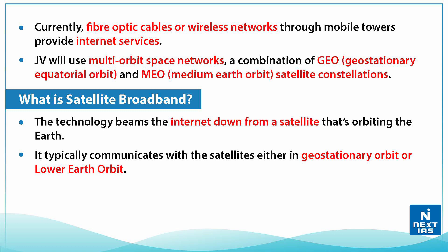When we talk about the geostationary orbit, it is also known as geosynchronous equatorial orbit, which is exactly 35,786 kilometers in altitude above the earth's equator.